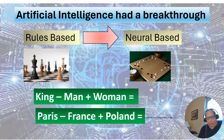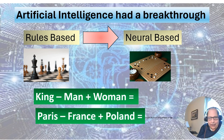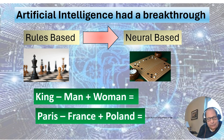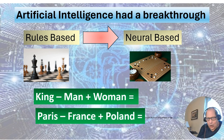Let's talk about what the breakthrough was. Previous to that, AI was rules-based. Big Blue was a rules-based program that learned all the rules around chess and was able to have a good game against a grandmaster. But there's a game played in Asian countries called Go, and it is so complex that you can't learn all the rules — there's an infinite number of rules.